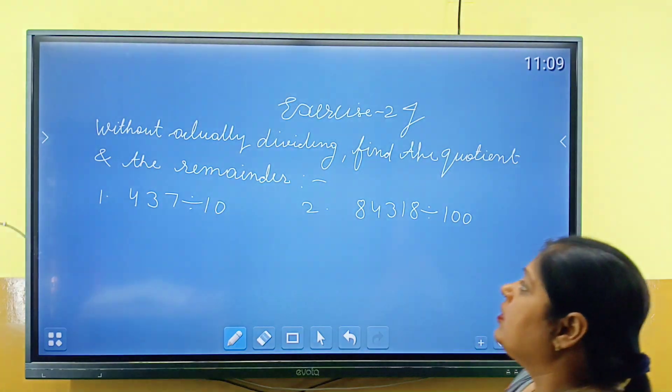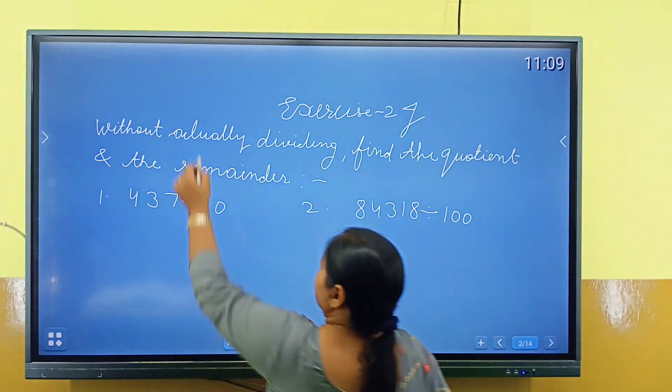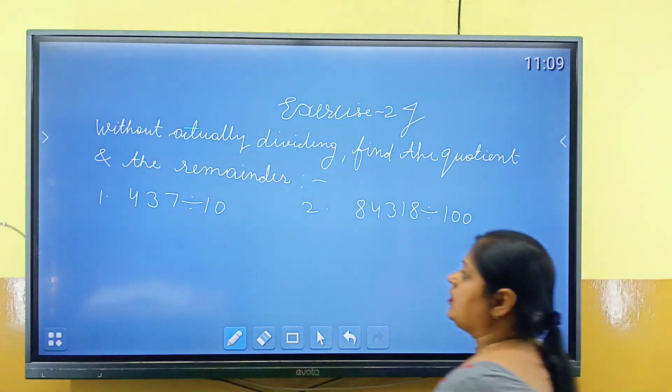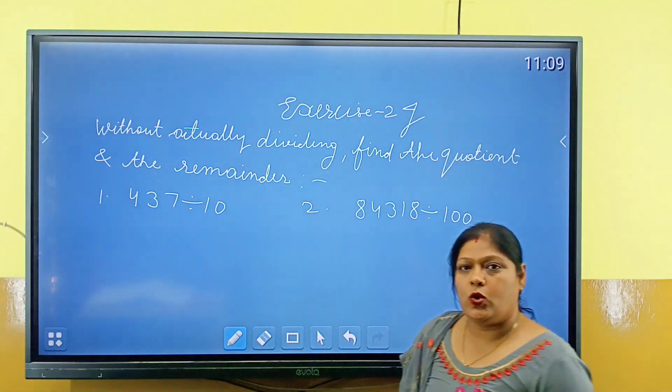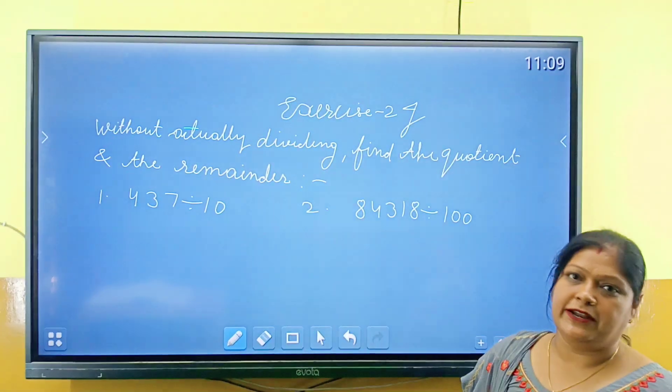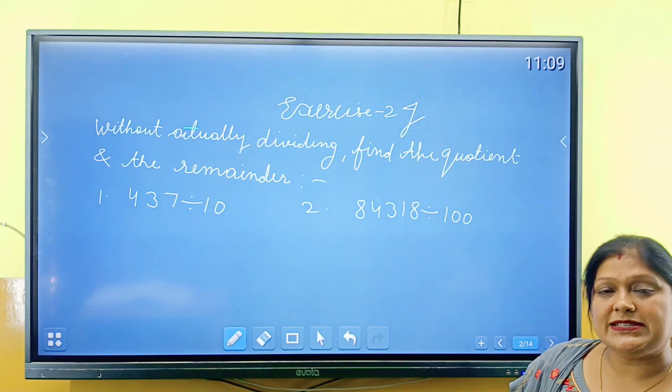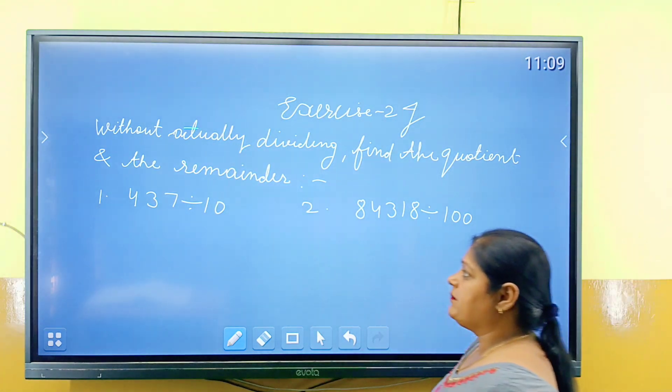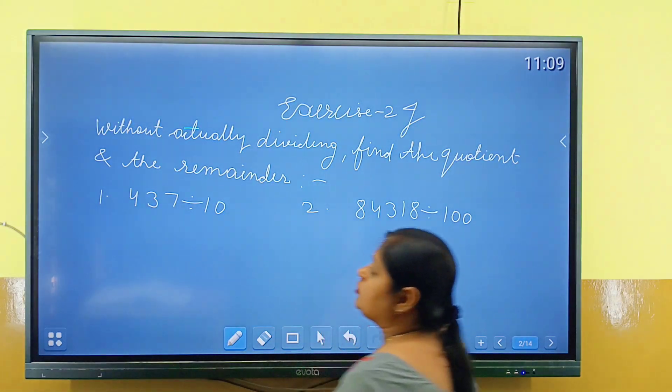Students, without actually dividing, find the quotient and the remainder. So students, without divide, what do we do? We will find our quotient and remainder. We can find our quotient, but without divide, we will find our quotient.